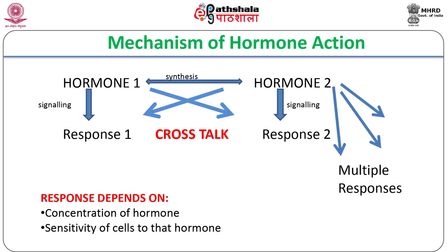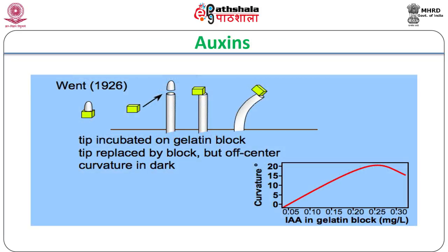Genetic screens for hormone insensitivity, in spite of excess hormone availability, led to isolation of mutants defective in hormone signaling. This enabled identification of hormone receptors and signaling intermediates.